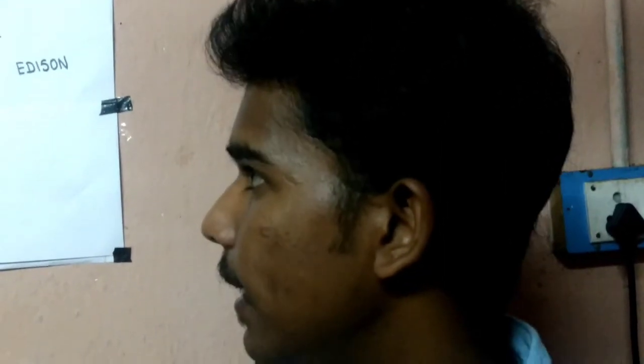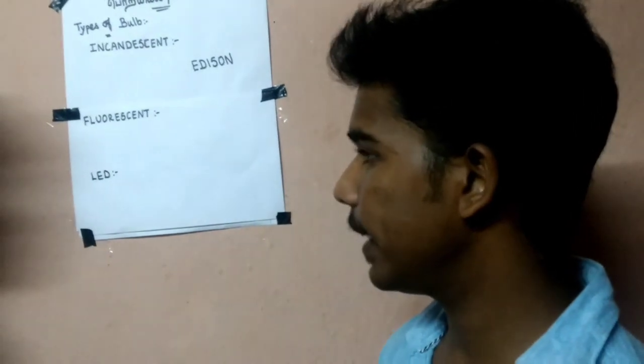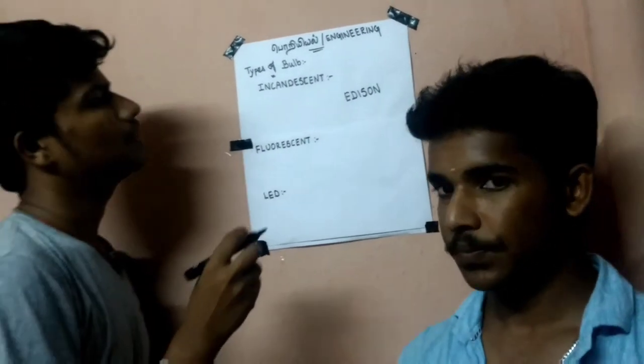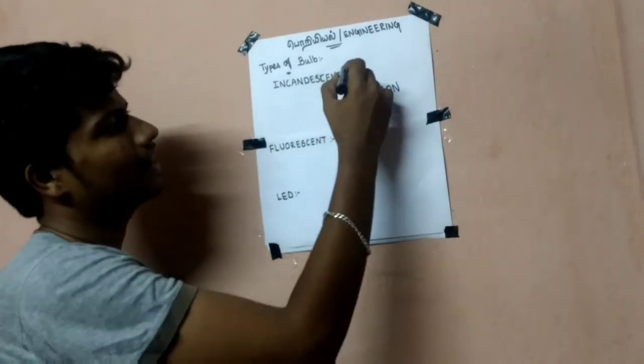Shiva, there are three types of bulbs: Incandescent, fluorescent, and LED. What is this bulb called? First of all, the bulb is called an incandescent bulb.